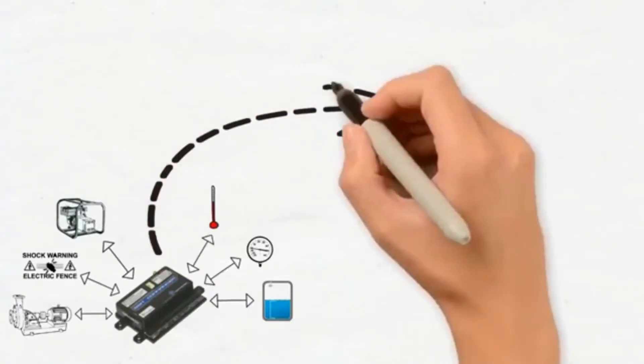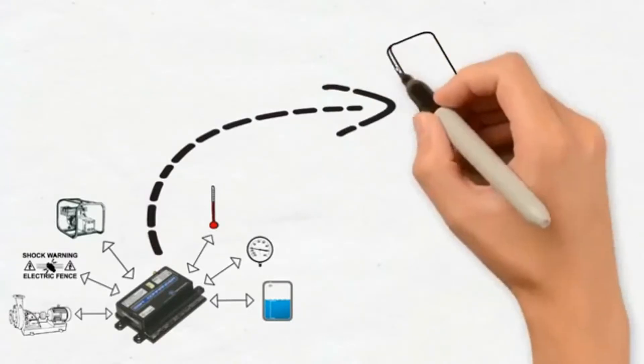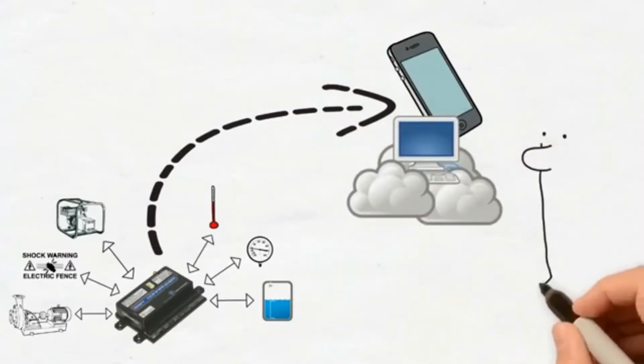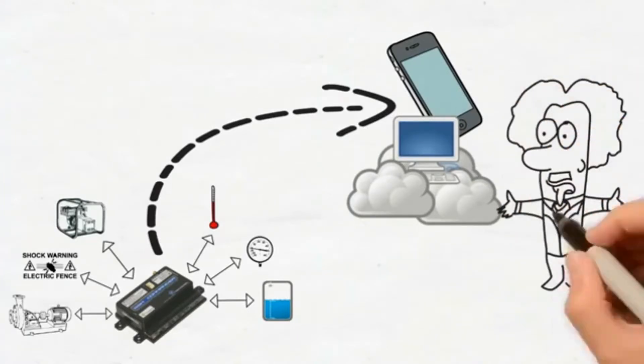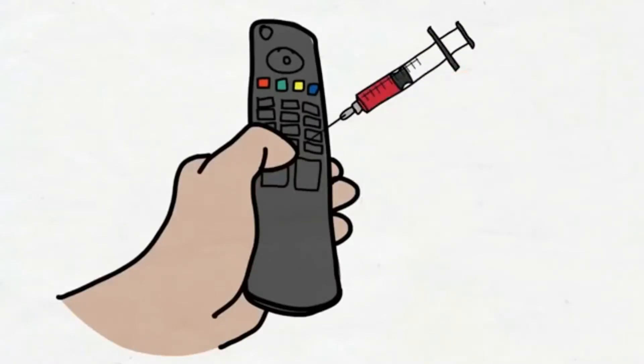The GSM Commander communicates from anywhere in the world, directly to your phone or to an internet server. This allows you to remotely monitor and control any installation from your phone or your browser. Think of it as a remote control on steroids.